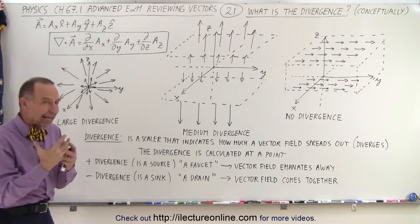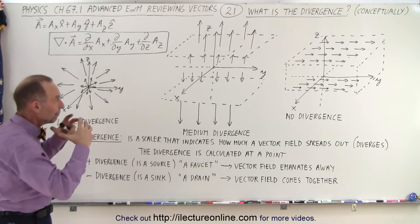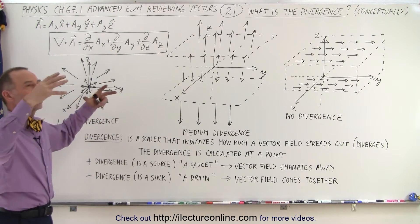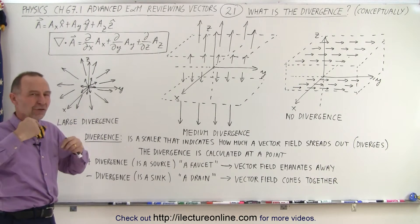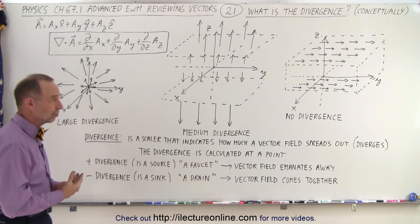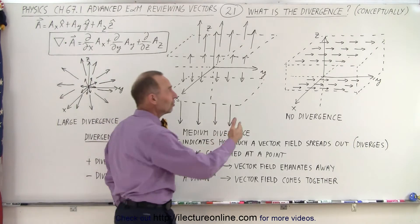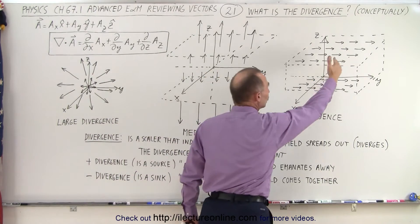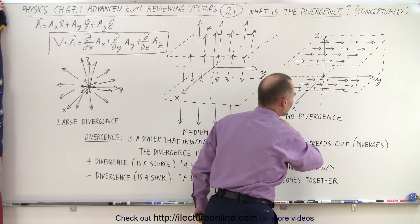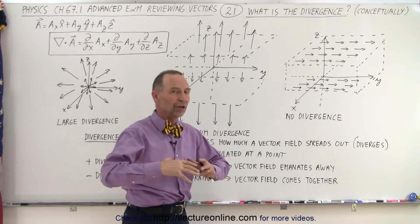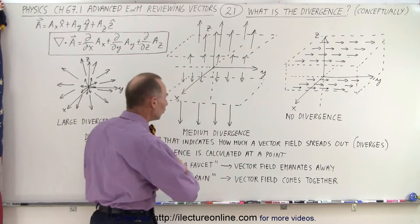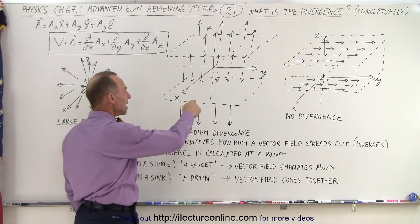That scalar indicates how much the vector field spreads out — does it become bigger when I travel in the x, y, or z direction, or in all directions? In the first field, since the vector field doesn't change when I travel in any direction, there is no divergence. The vector field doesn't diverge or spread out.